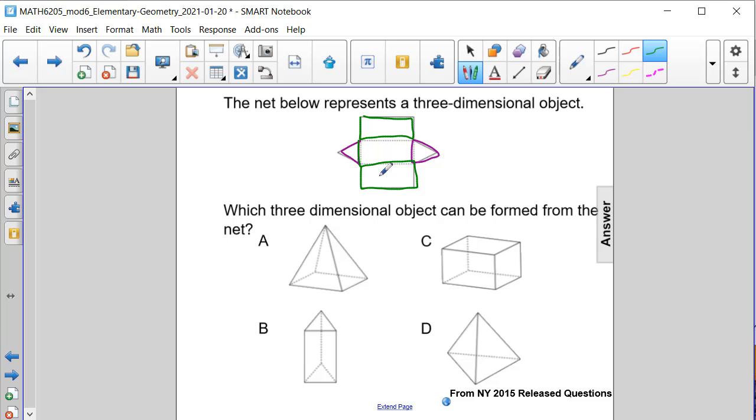And when you have a series of rectangles that amount to the same number of sides that occur on the bases, you end up getting a prism. And since our bases here are triangles, it will be a triangular prism, or answer choice B.